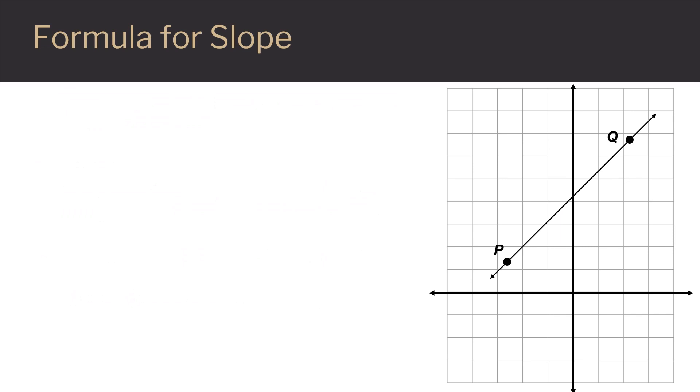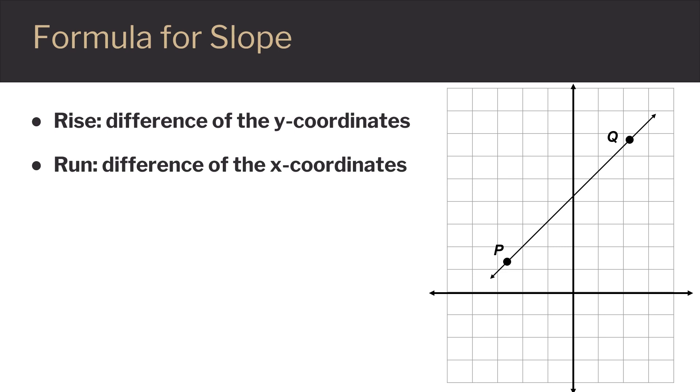For slope, rise is always the difference in the y-coordinates and run is always the difference in the x-coordinates.